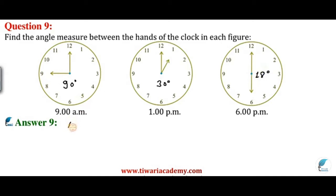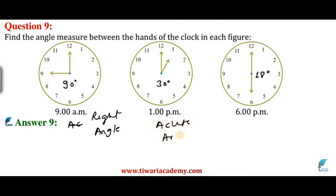And this is completely a 180 degree angle, so this is a 180 degree angle. If we talk about angle types, this is a right angle. Right angle is 90 degrees. This is our right angle and this is our acute angle. And if we talk about this angle, it will be completely a straight angle. That was our question number 9.